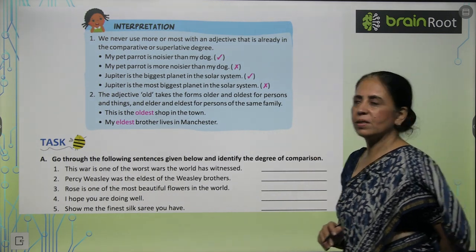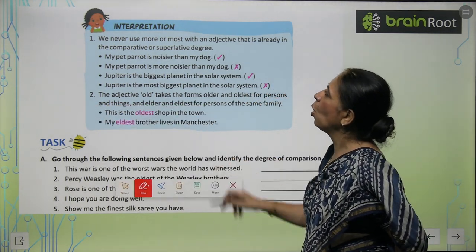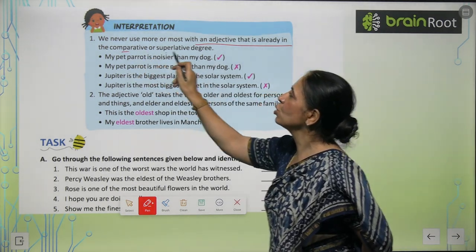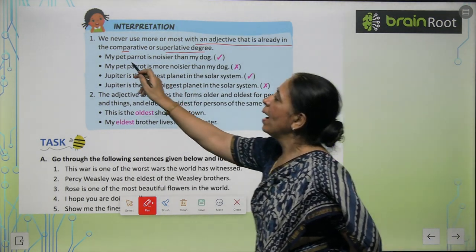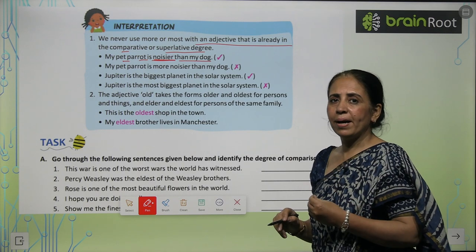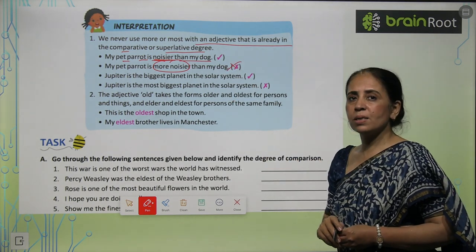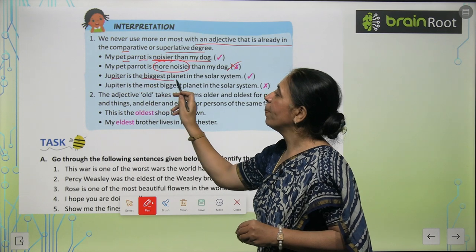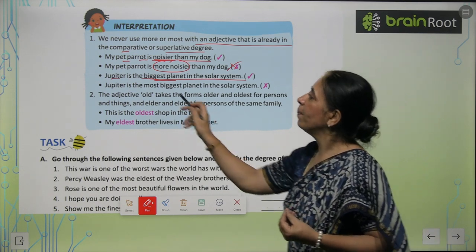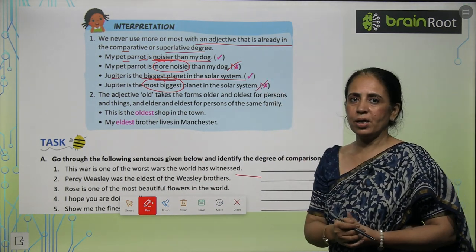Let's look at some important rules. We never use 'more' or 'most' with adjectives that are already in the comparative or superlative degree. For example, 'My pet parrot is noisier than my dog' — since 'noisier' is already comparative, writing 'more noisier' would be wrong. Similarly, 'Jupiter is the biggest planet in the solar system' — 'biggest' is already superlative, so 'most biggest' would be wrong.